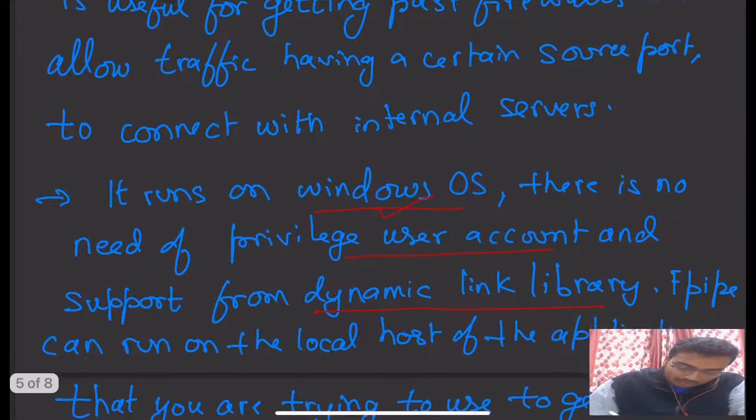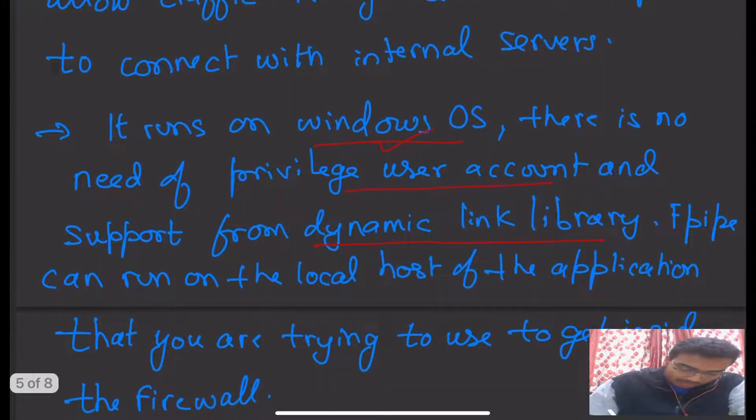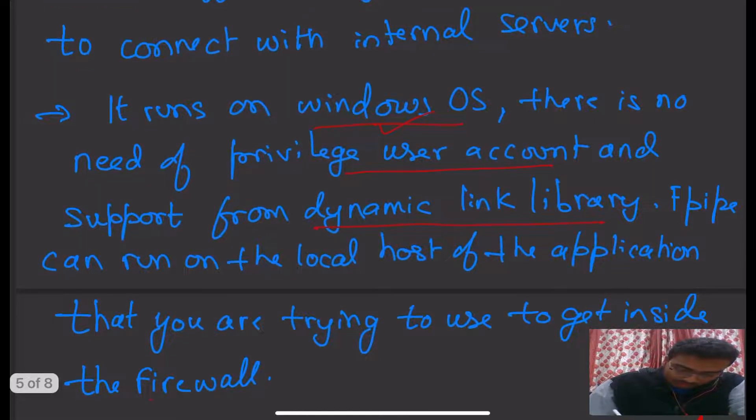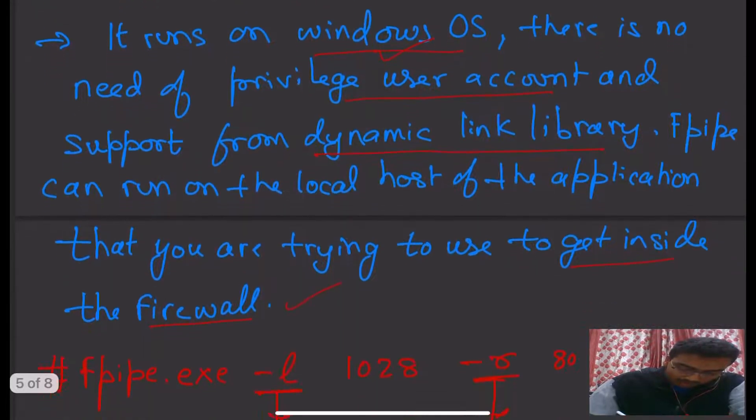Here, we do not need support from dynamic link library. F-Pipe can run on the local host of the application that you are trying to use to get inside the firewall. This is another benefit of using F-Pipe.